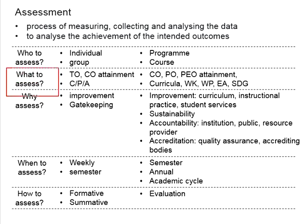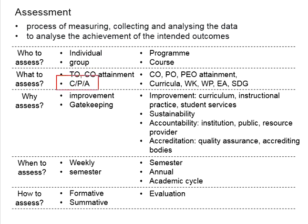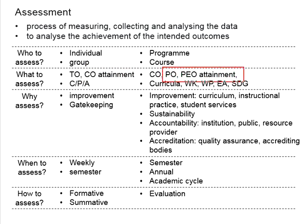The second question is: what to assess? Normally, we look at the attainments of TO and CO. TO stands for topic outcome, CO stands for course outcome. We also want to look into the cognitive, psychomotor, and affective domains. When we do the assessment, we want to know whether the students can cope with the lesson or the topic delivered, and whether the students can fulfill the requirement of the course. Based on the results acquired from the CO attainment, we are able to foresee the possibility of attainments at the PO and PEO levels. The nature of what we assess depends on the purpose.